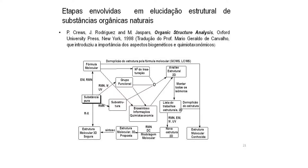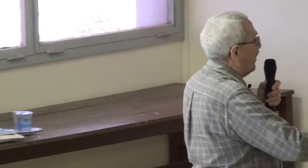Várias etapas estão envolvidas no processo de elucidação estrutural, desde substâncias conhecidas até moléculas extremamente interessantes e novas, envolvendo ressonância magnética nuclear, espectrometria de massa de baixa e alta resolução, ultravioleta, infravermelho, conhecimento de química orgânica e biossintética. Quem trabalha com produtos naturais e não souber química orgânica não vai se dar bem. Com certeza, porque eu vivo isso e é extremamente importante.